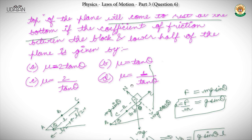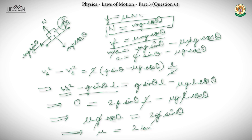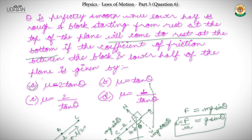Basically, the approach is: first make a diagram, then split the problem into two conditions — the upper frictionless half and the lower rough half — apply kinematics to each, and solve. That's our question 6 done.